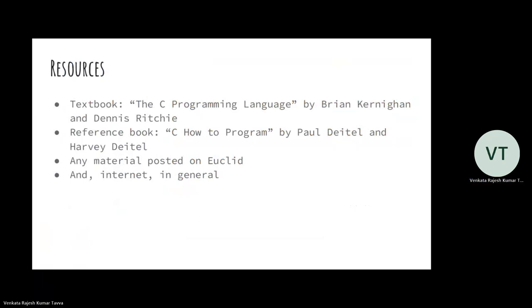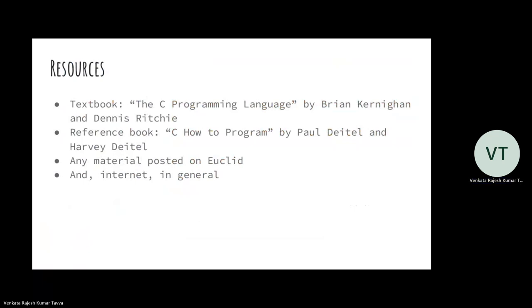Once you cross school and come into degree level, your pattern of learning will be very different. Textbook will not be your main resource — the internet will be your main resource, and the textbook will be a backup resource. You should be able to quickly look up something, find it out, find a solution. Apart from textbooks, the resources which we post will be your main resources, and the internet is always available to you.